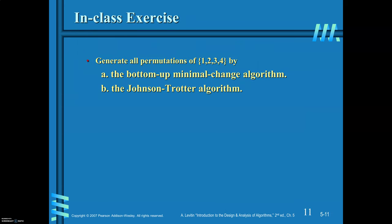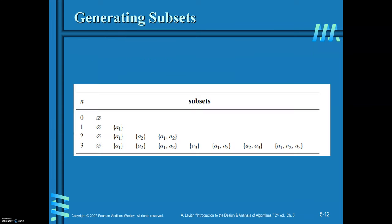Your assignment is to generate all possible permutations for 4 elements by applying both methods: the bottom-up approach and the Johnson-Trotter algorithm.